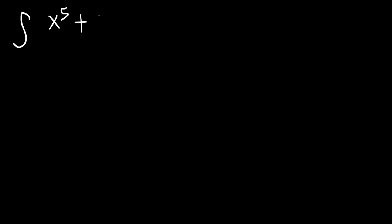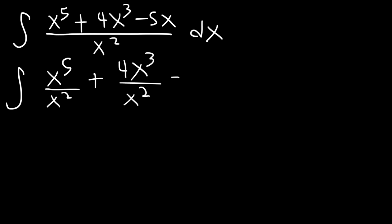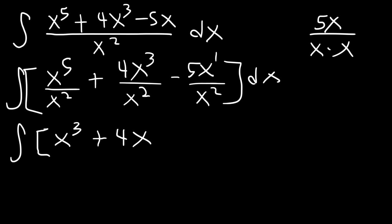What if you're given a fraction? For instance, the integral of x to the fifth power plus 4x cubed minus 5x, all divided by x squared. The first thing you should do is divide every term in the numerator by x squared — this works if there's only one term in the denominator. Separate it into three fractions: x to the fifth divided by x squared gives x cubed; 4x cubed divided by x squared gives 4x; and 5x over x squared simplifies to 5 over x.